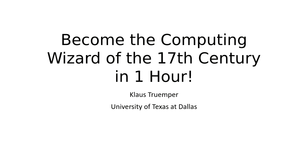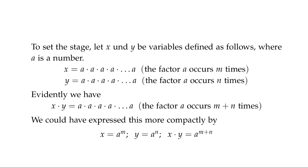We start with something that when I was introduced to it was considered to be really trivial. Suppose you have x and you want to multiply a times a, m times — so x equals a to the m — and y equals a to the n. Then x times y is a to the m plus n, because you just multiply all those a's together, and they occur m plus n times.